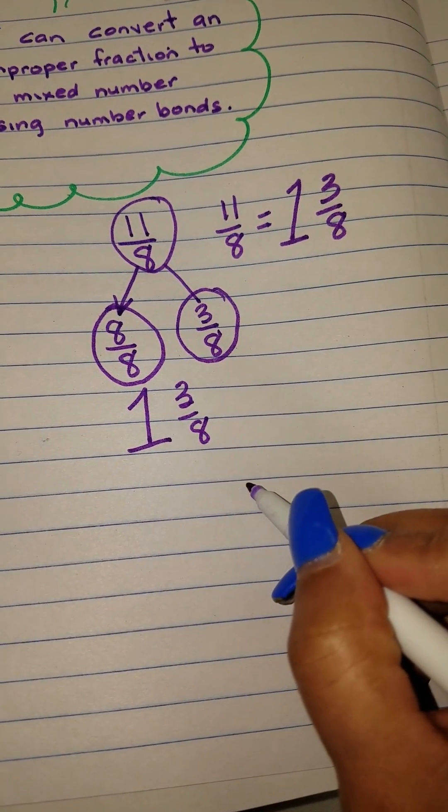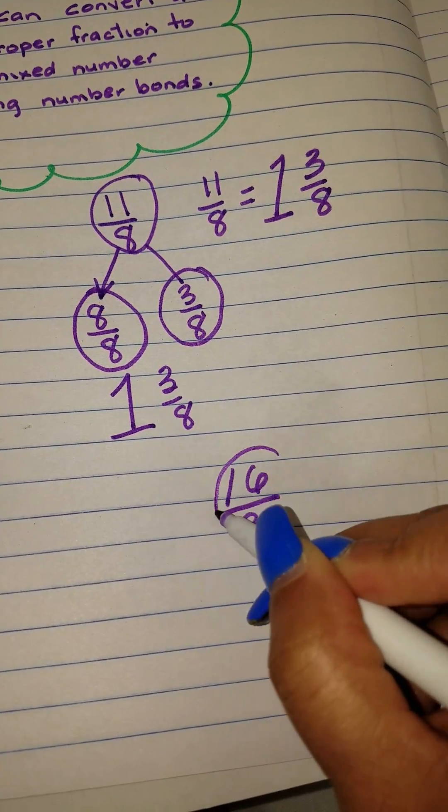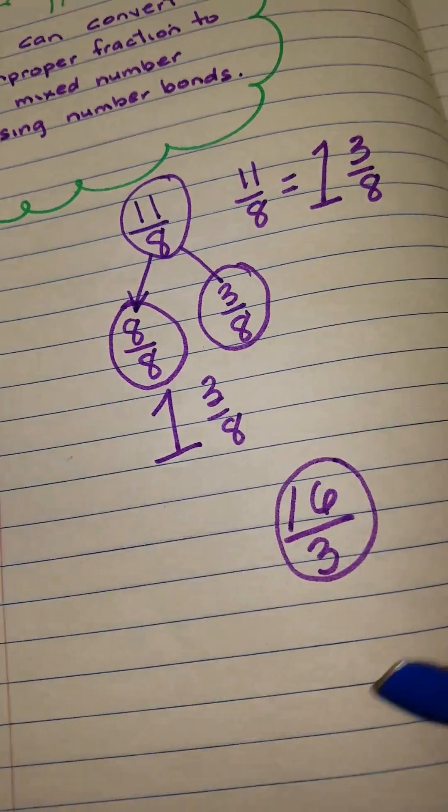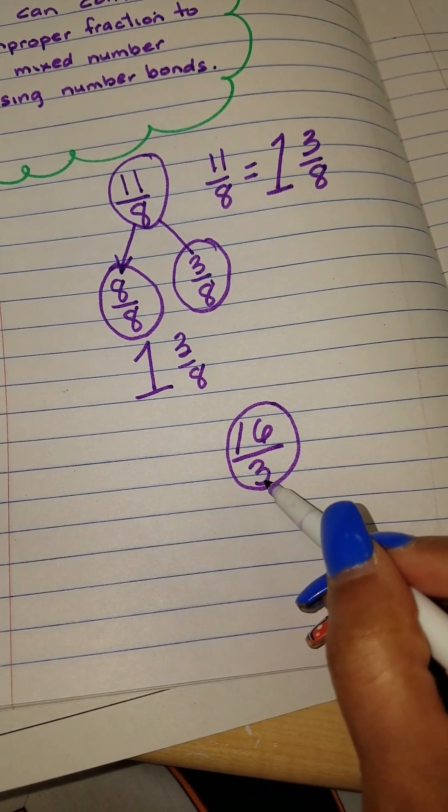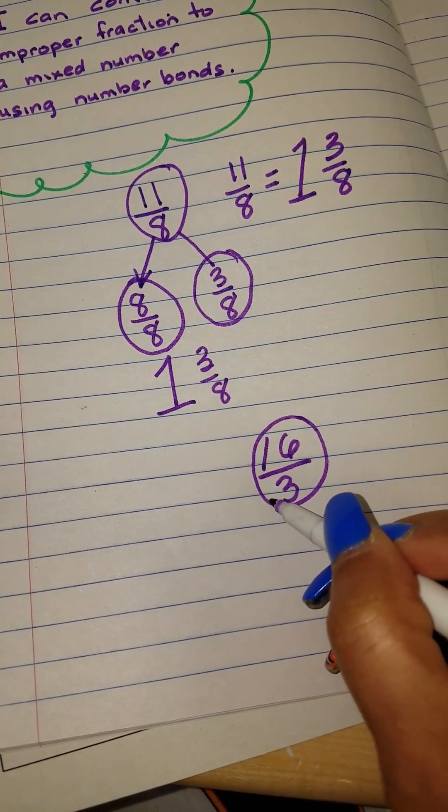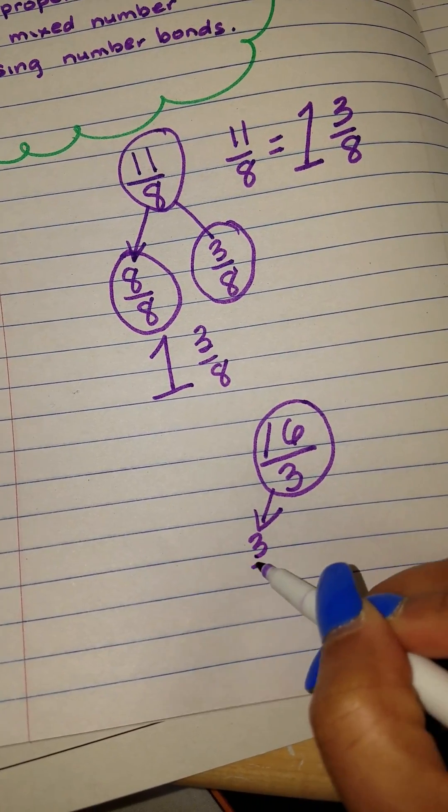Now what if we had 16 thirds? We're creating a number bond for 16 thirds. Again, our denominator is 3. If we're taking out groups of whole fractions, it would be 3 thirds.